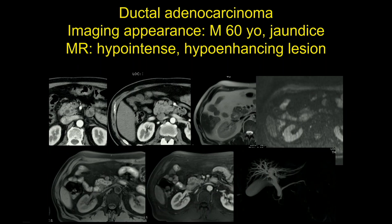A poorly visible mass in the pancreatic head may be seen on CT, but with MRI we can appreciate slight hypointensity. The T1 fat-saturated breath-hold sequence is the best sequence to detect pancreatic abnormalities. We can easily see this hypointensity in comparison to the rest of the pancreas — this is the hypo appearance.